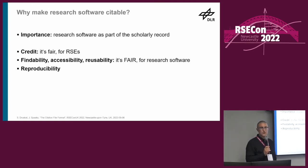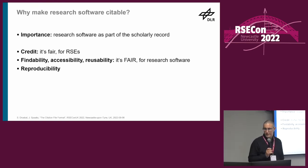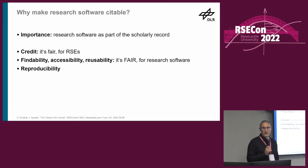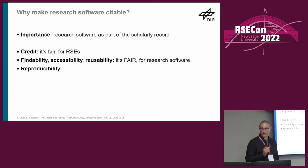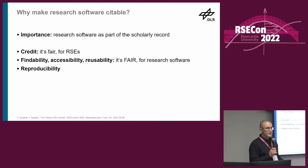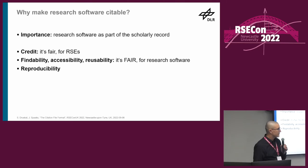It also helps us to get credit for our work rather than having to write papers every time we finish up or release a piece of software. It also helps the findability, accessibility, and reusability of software just by making clear what software has been used in other research, so we can learn from them and pick up software packages that have been used in different use cases. And reproducibility - software citation is a good entry point because unless you know what software has been used for a specific piece of research, you wouldn't be able to reproduce the results.